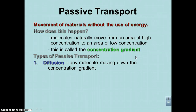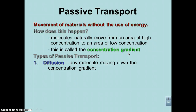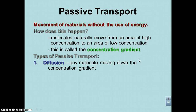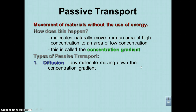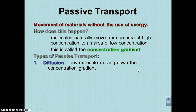Passive transport comes in three different flavors. The first one is diffusion — this is any molecule moving down the concentration gradient. You've all come across this. For example, somebody sprays air freshener in one part of your house and it diffuses throughout. You'll smell it in other rooms. Like coming home and smelling pizza cooking in the kitchen — high concentration of pizza molecules there, low concentration in the living room. The molecules diffuse from high to low concentration.